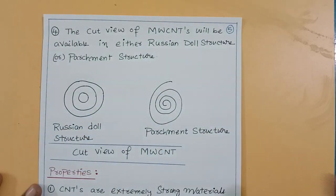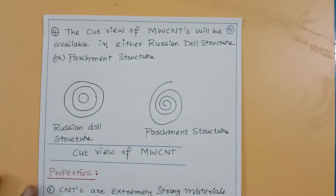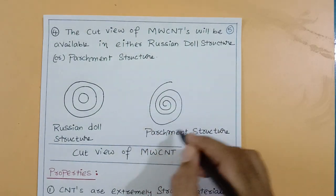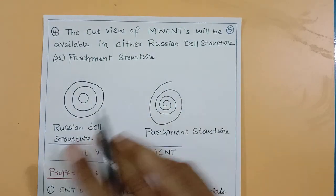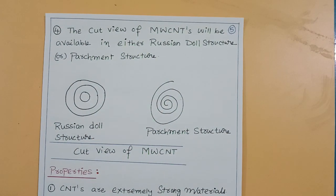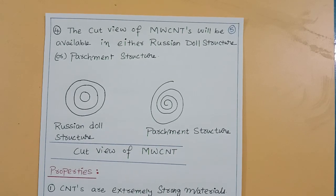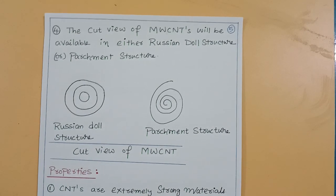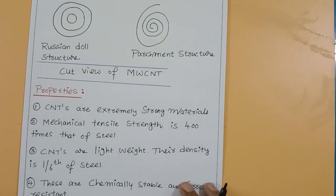In multi-walled carbon nanotubes, there are many walls made of graphene sheets. That is about the types of carbon nanotubes: single-walled carbon nanotubes and multi-walled carbon nanotubes.